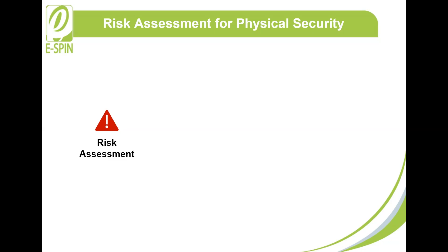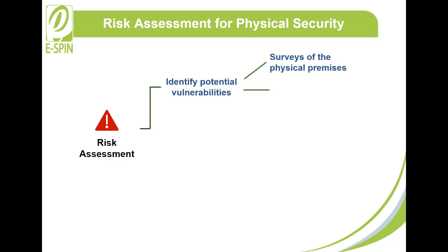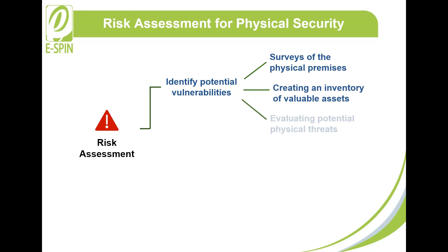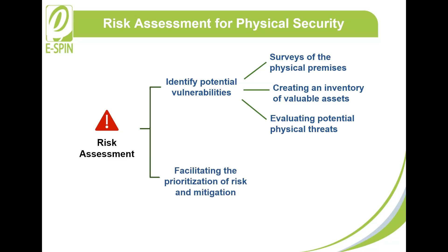There are two key objectives of risk assessment for physical security: identifying potential vulnerabilities by conducting surveys of the physical premises, creating an inventory of valuable assets, and evaluating potential physical threats; and facilitating the prioritization of risk and mitigation through likelihood assessment and impact assessment.